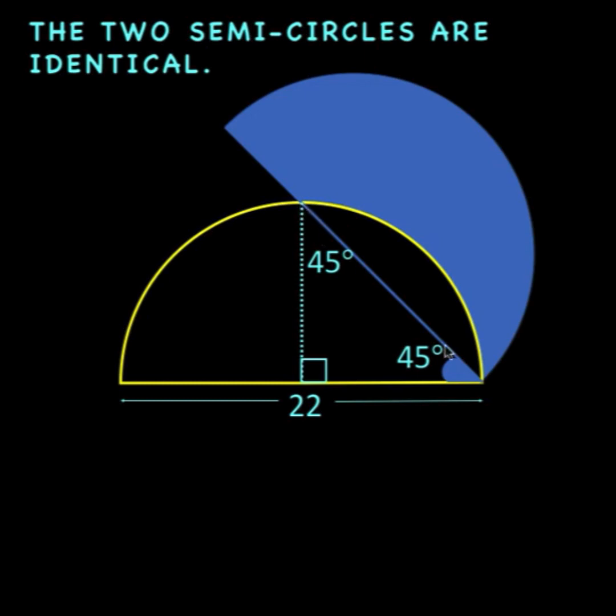Now, notice that the angle formed from this point of intersection to this point and tracing the diameter of the semicircle is an inscribed angle to the semicircle. And so if the measure here is 45 degrees, the measure of the intercepted arc must be twice this 45 degrees.